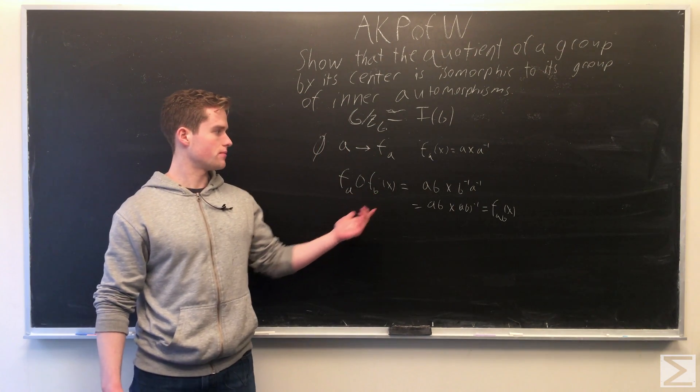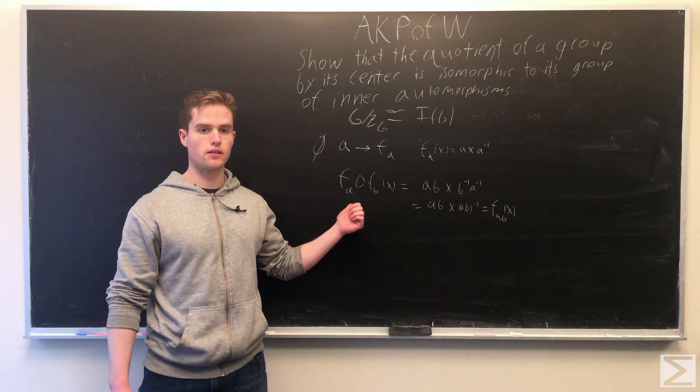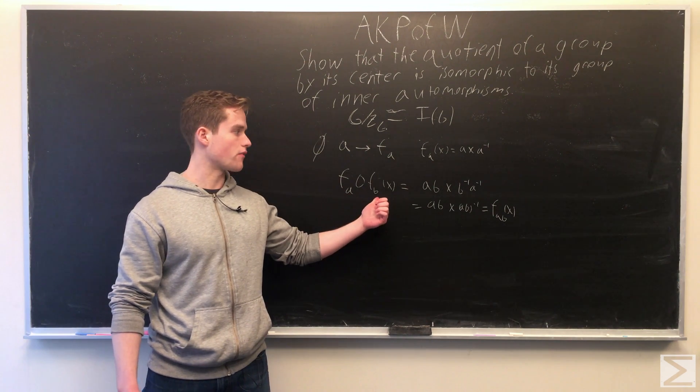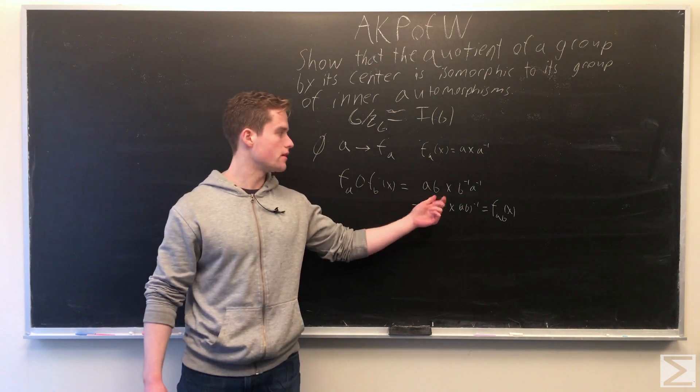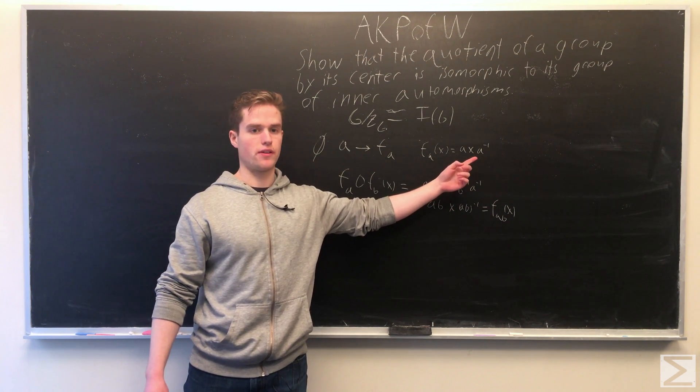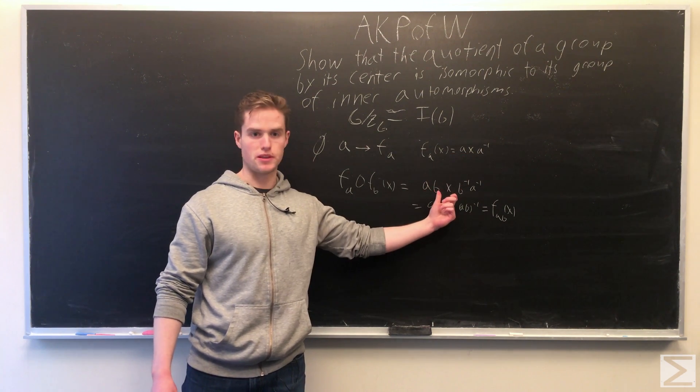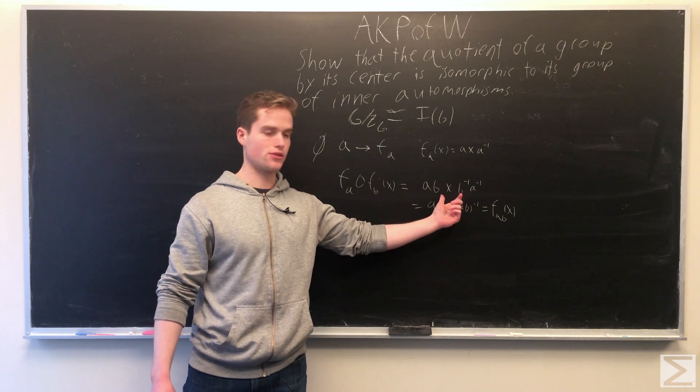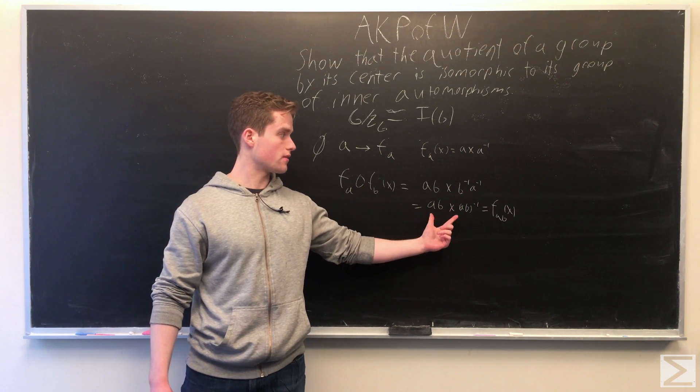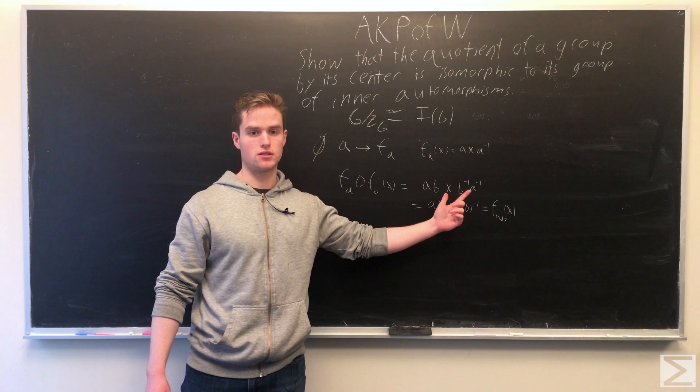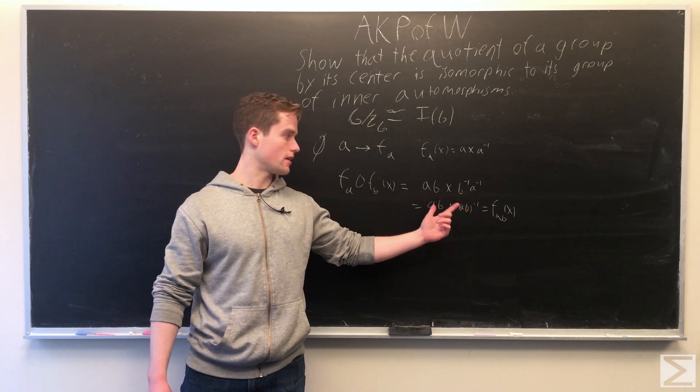Under composition, F(A) composed with F(B) gives us A times BXB^(-1) times A^(-1), which equals (AB)X(AB)^(-1). This is equivalent to F(AB)(X).